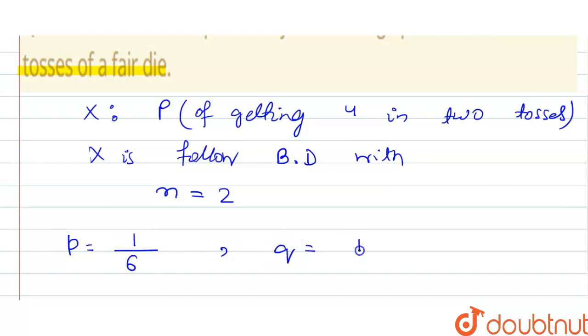And q equal to 1 minus p, 1 minus 1 by 6. We got 5 by 6.